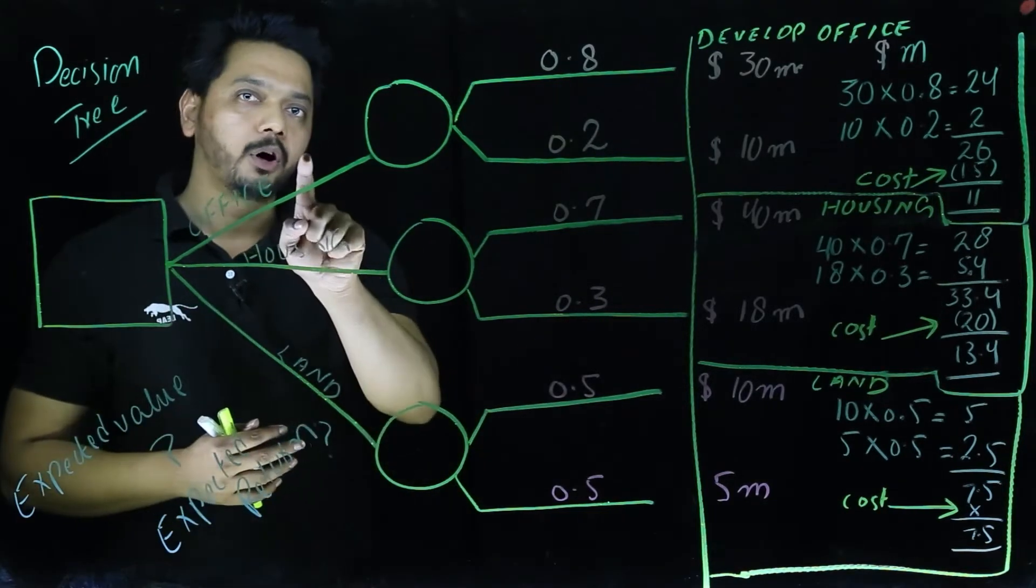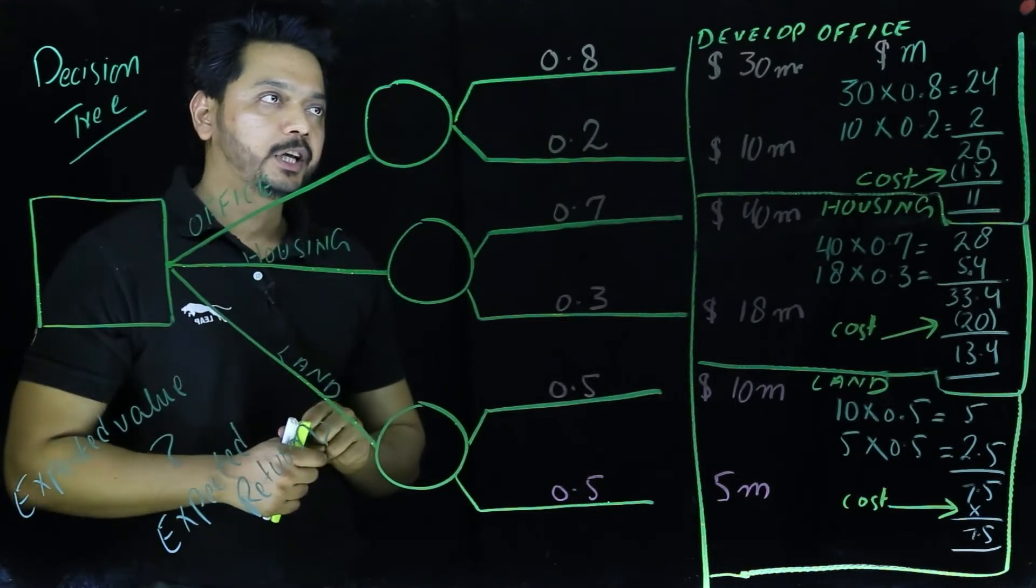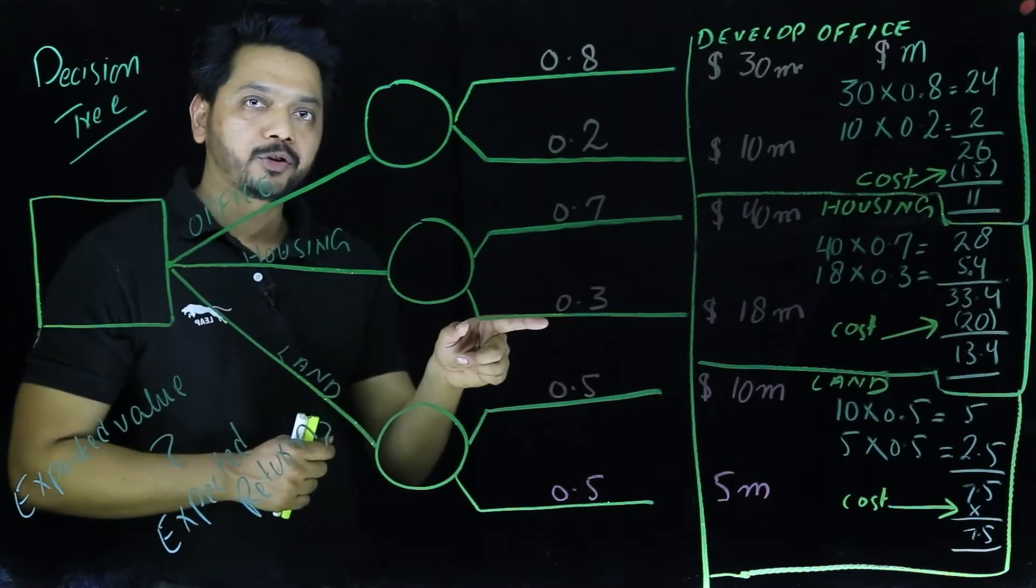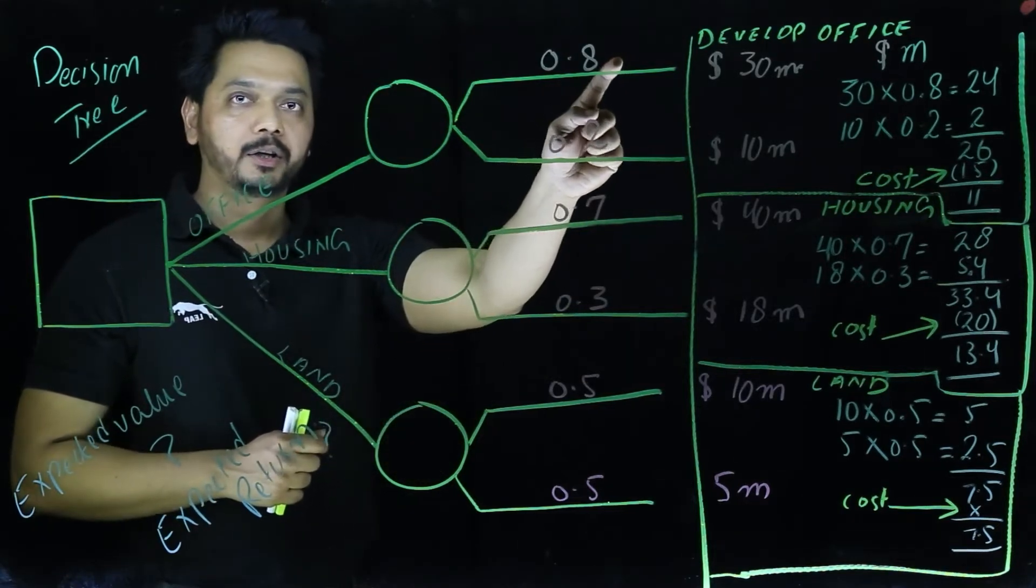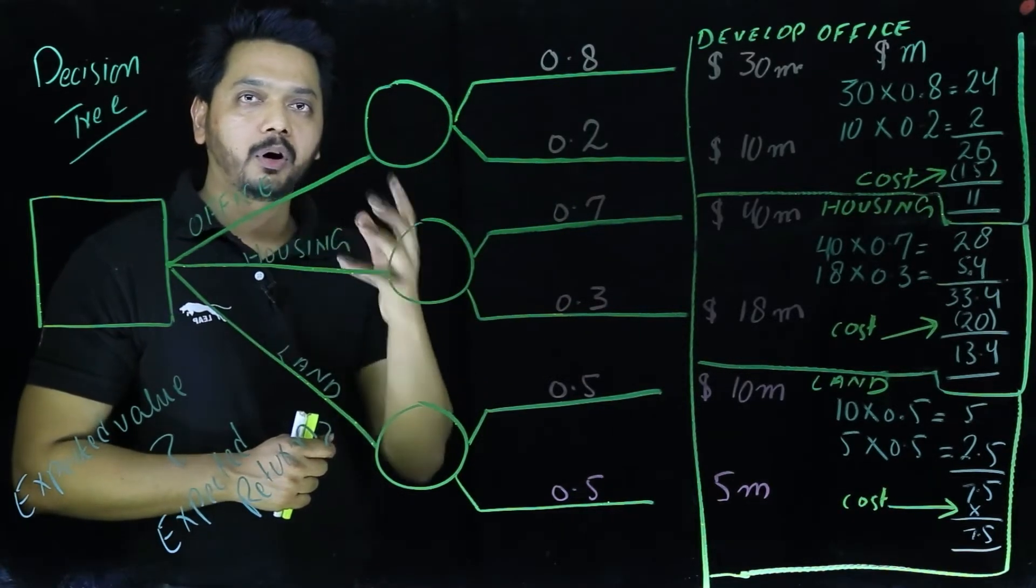Let's start. If they come up building up the offices here, you see the market information of expected failure and success is given over here. If they decide to come up with the offices, the expected probability of success is 80%.